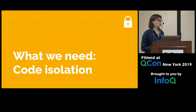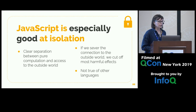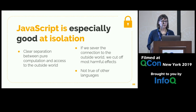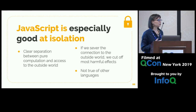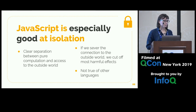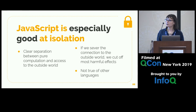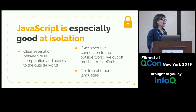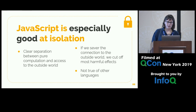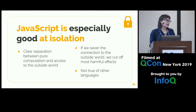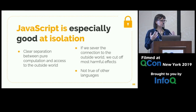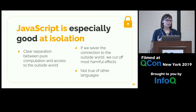What we actually need is code isolation. And it turns out, through an accident of history, JavaScript is especially good at code isolation. JavaScript has a clear separation between pure computation and access to the outside world. If we sever that connection to the outside world, we can get rid of a lot of the harmful effects. This is not true of other languages — Java, for instance, doesn't have this clear separation. As JavaScript developers, we're actually in a really good place for doing code isolation.